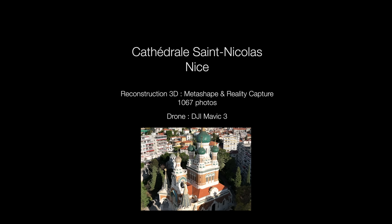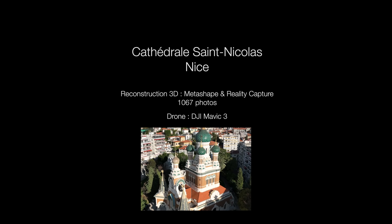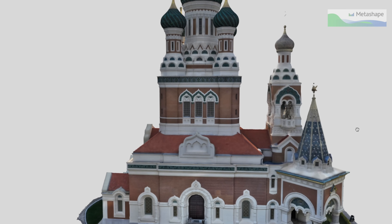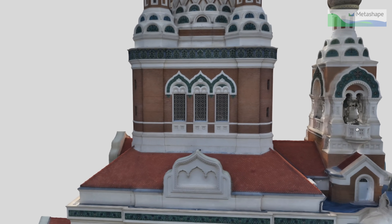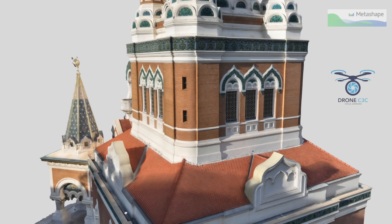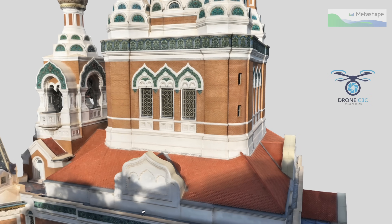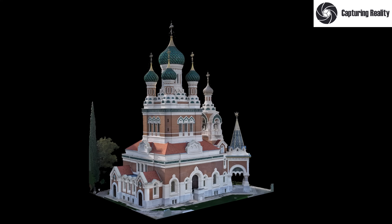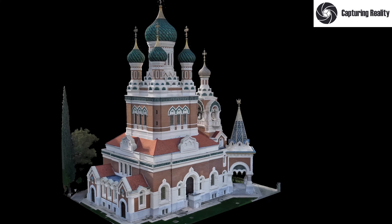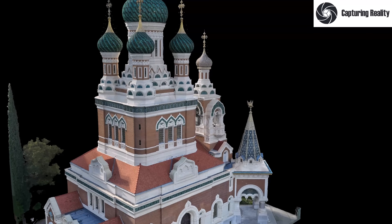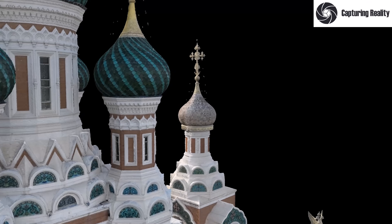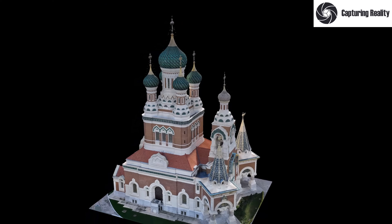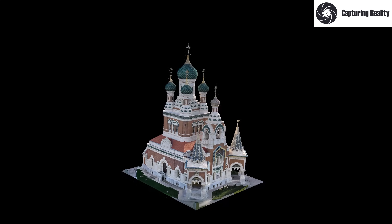Je vous partage un septième projet réalisé avec le Mavic 3 : la modélisation de la cathédrale Saint-Nicolas de Nice. Cette magnifique réalisation est l'œuvre de Christophe Campana de la société Drone C3C. La captation repose sur 1067 photos prises avec le mode intervalle et en pilotant le Mavic 3 à vitesse lente en mode ciné. Je vous laisse apprécier ce très beau travail de captation manuelle et de reconstruction d'un édifice complexe et de très grande dimension.